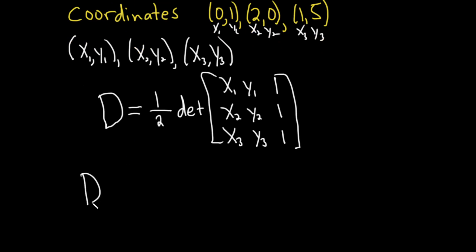So D equals one half times the determinant of—x1 is 0, y1 is 1, then 1. Then it's 2, 0, 1, because x2 is 2 and y2 is 0, and then it's 1, 5, 1. So basically, you're just writing down the points (0,1), (2,0), (1,5), and then you put 1s in the last column.